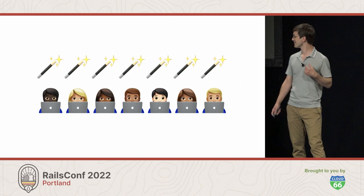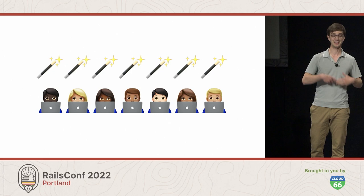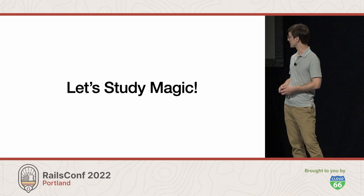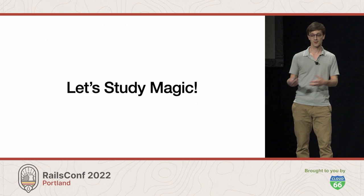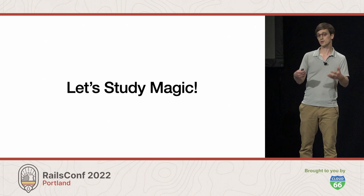I've been watching way too much Penn & Teller: Fool Us while preparing for this talk. But it seems to me that when a magician sees a trick that confounds them, they like to study how it works and incorporate that knowledge into their own repertoire. So we can do the same kind of study with Rails magic. And that's what this talk is about — we're going to study some of the parts of ActiveRecord associations that I've found confusing or interesting, with the hope that pulling back the curtain a bit will help you use associations more effectively.